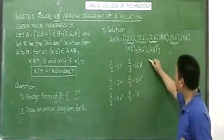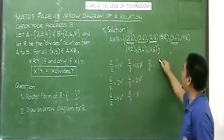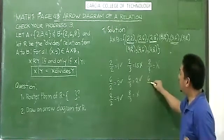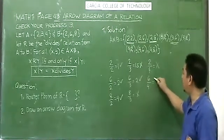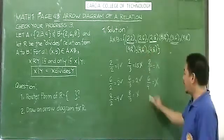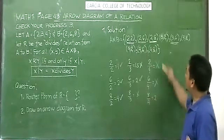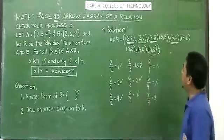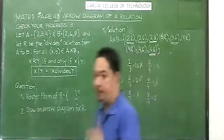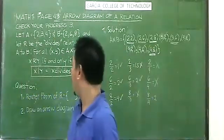For 4: (4,2) — 2 over 4 = 0.5. Not a whole number. (4,6) — 6 over 4 = 1.5. Also not a whole number. (4,8) — 8 over 4 = 2. Yes, it divides. So (4,8) is included. The pairs with double underline are the elements of R.